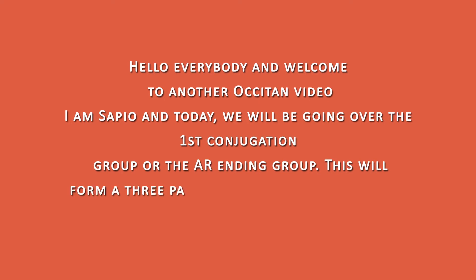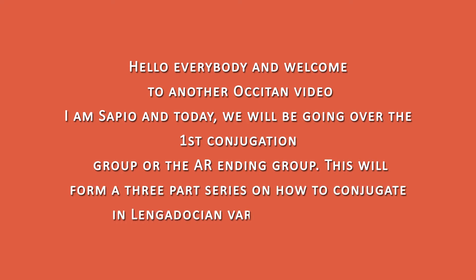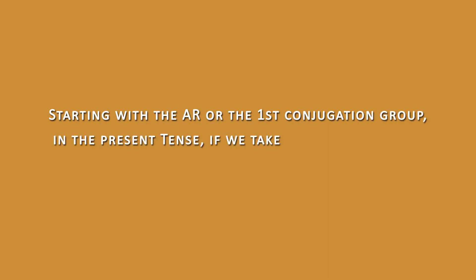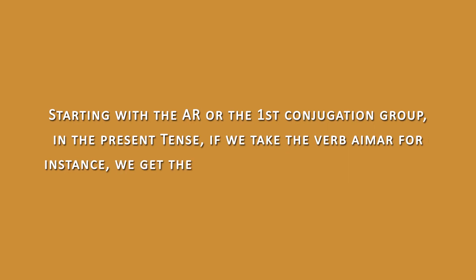This will form a three-part series on how to conjugate the Langadocian variant of Occitan. Starting with the AR group, or the first conjugation group, in the present tense — if we take the verb AIMAR, for instance, we get the following conjugation pattern.